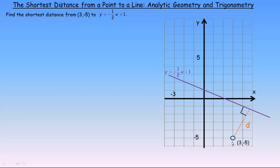Our example is finding the shortest distance from the point (3, -5) to a given line — that is, the perpendicular distance, hence the right angle shown. The slope of this line is -1/2, and the slope of the dotted perpendicular line is +2 (it goes over 1 and up 2). Since slopes of -1/2 and 2 are negative reciprocals, those lines are perpendicular, confirming the right angle.